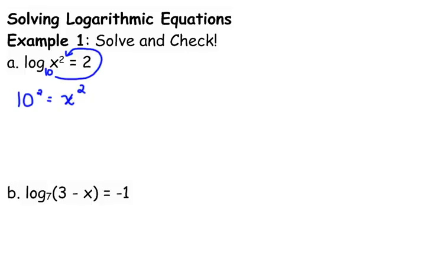If 10 squared is equal to x squared, let me work it out. 10 squared is 100. What's the opposite of squaring something? Taking the square root. What must we remember when we take the square root? Positive and negative. You must remember the positive and the negative.